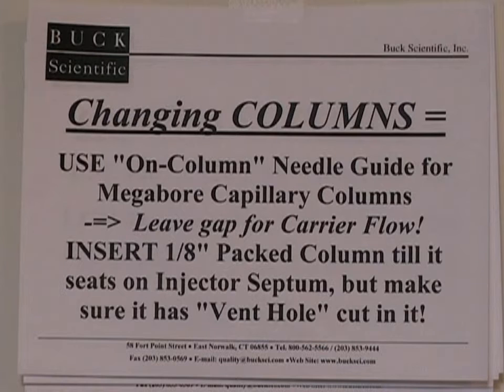Likewise, for a 1⅛ inch pack column, make sure that there is a vent hole to allow the carrier gas to go through, or when you seat it up against the septum, you will not get any flow through the column. Check these if you ever have difficulties getting peaks off the system.